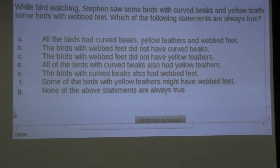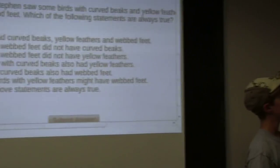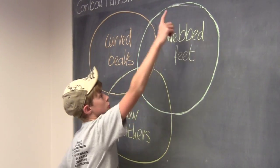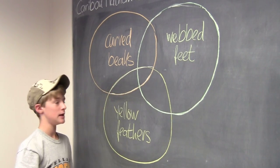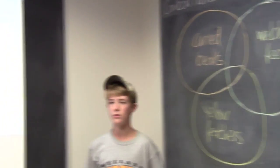And now C. The birds with webbed feet did not have yellow feathers. So that would be true if these two circles would not overlap, but they may or may not overlap. So that is not always true. So C would be wrong too.